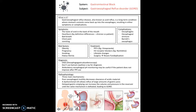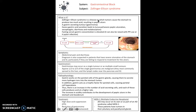Zollinger-Ellison syndrome is a disease in which tumours cause the stomach to produce too much acid, resulting in peptic ulcers. The key chain to understand is: G-cells produce gastrin, which acts on enterochromaffin-like cells to produce histamine, which then acts on parietal cells to release H+ (acid). D-cells produce somatostatin, which can block this process. It's this excess acid which leads to peptic ulceration, esophagitis, diarrhea, and malabsorption seen in Zollinger-Ellison syndrome.